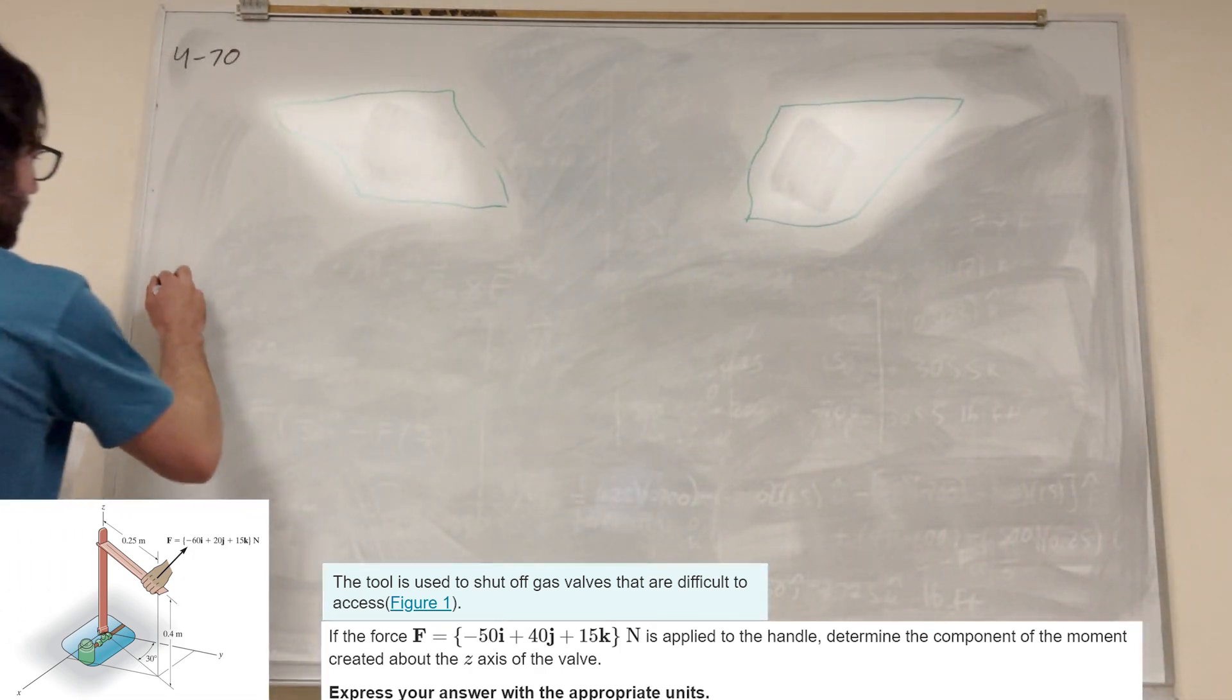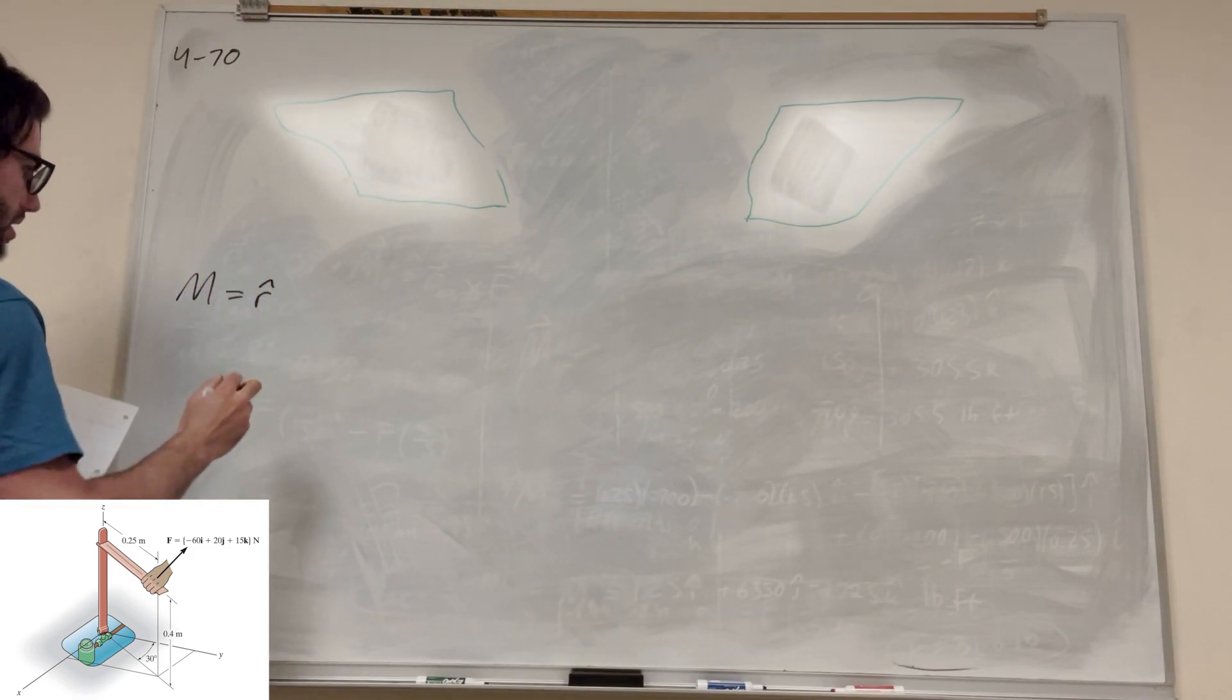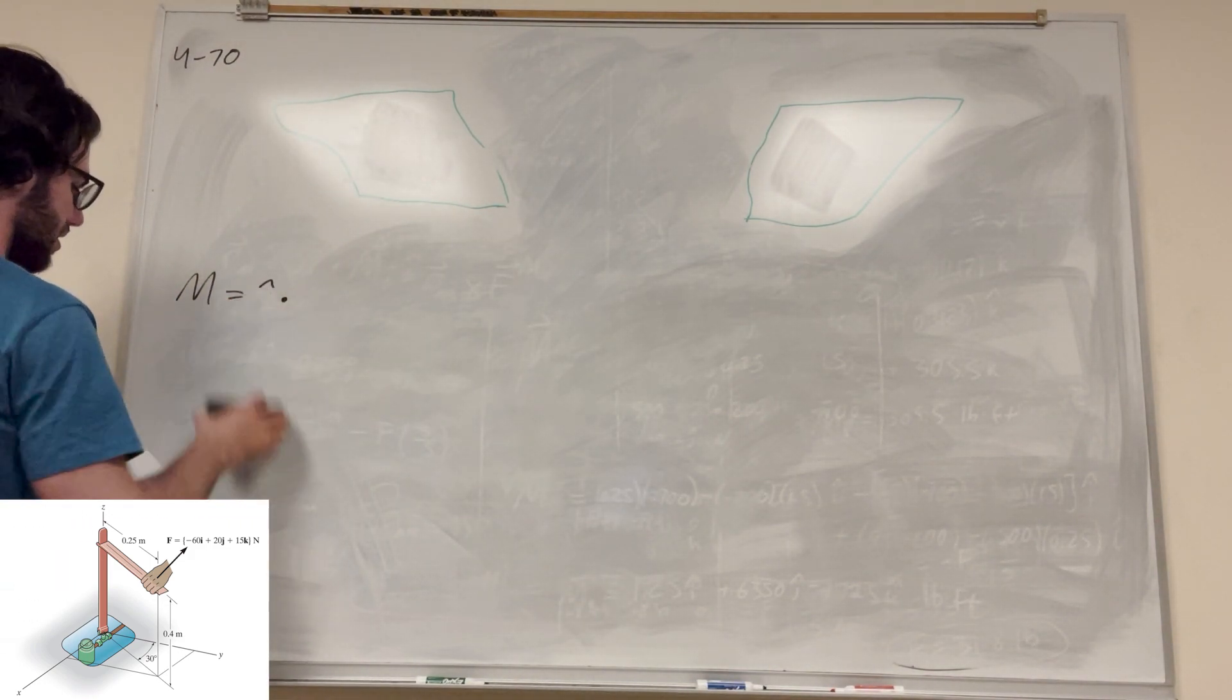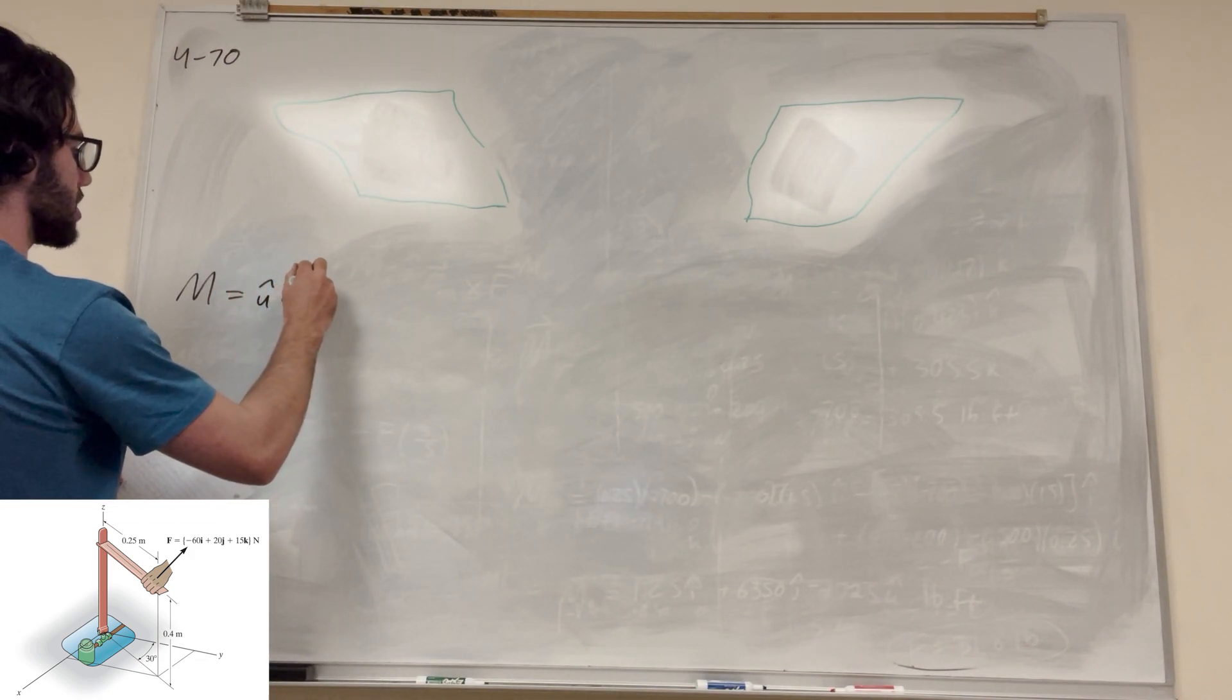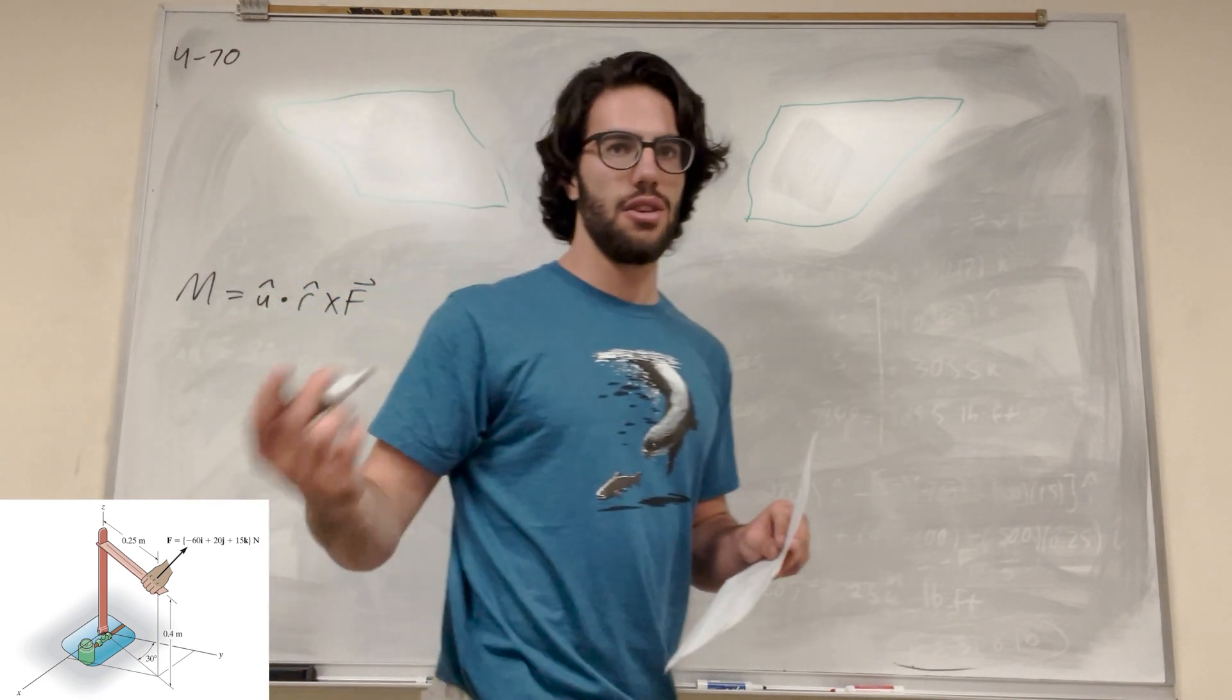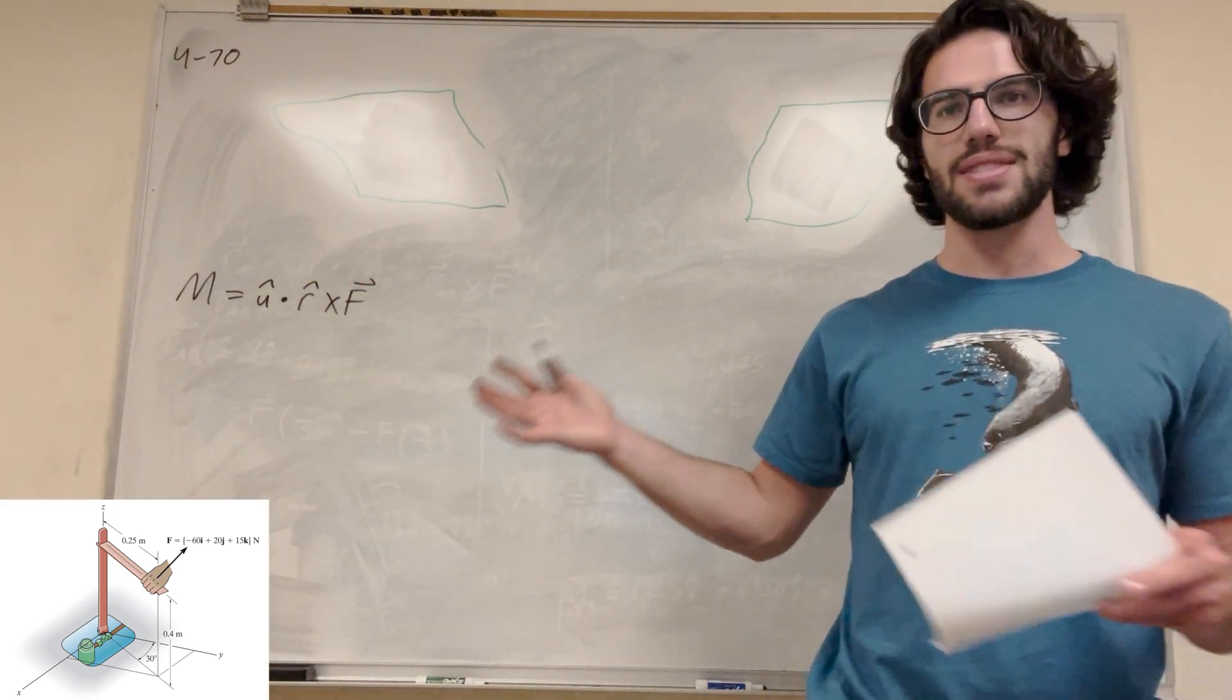So a moment around an axis is going to be the unit vector of the axis we're rotating around, dotted with the position vector crossed with the force vector. So this position vector is what we're going to have to find, and the unit vector we can pretty much just figure out really easy, and we have force. So let's do it all.